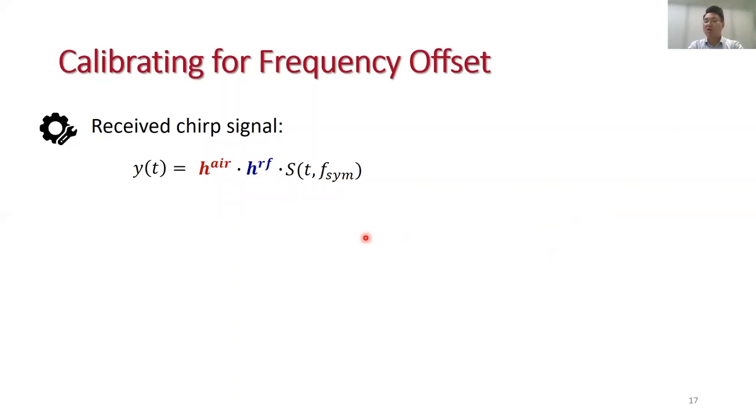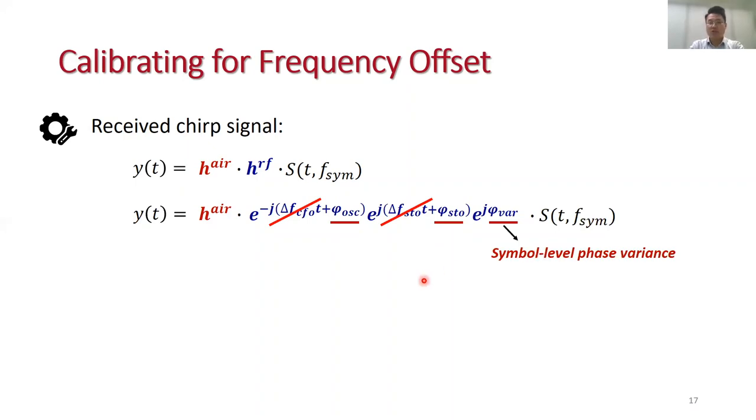Generally, we can put all impacting factors into a unified signal model. Suppose the transmitted chirp signal is an STF symbol. The received signal contains both the air channel and the RF channels. We replace this RF channel with CFO, STO, and the phase offset of radio hardware. The final received signal will be like this. We can use the method presented before to estimate CFO and STO and remove them from received signals. However, the phase offsets of radio hardware cannot be removed. It remains in received symbols. So the next question is, how can we remove these random phase offsets?